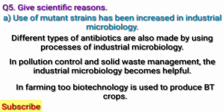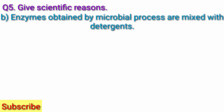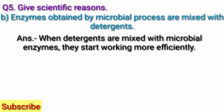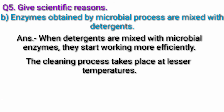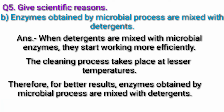In farming too, biotechnology is used to produce better crops. Question B. Enzymes obtained by microbial processes are mixed with detergents. Answer: When detergents are mixed with microbial enzymes, they start working more efficiently. The cleaning process takes place at lesser temperatures. Therefore, for better results, enzymes obtained by microbial processes are mixed with detergents.